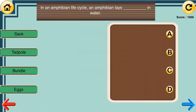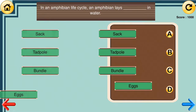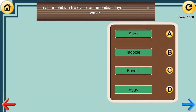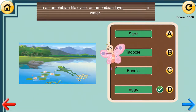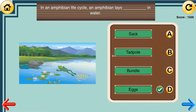In an amphibian life cycle, an amphibian lays blank in water. [Answer choices: sack, tadpole, bundle, eggs.] You did it! Eggs.